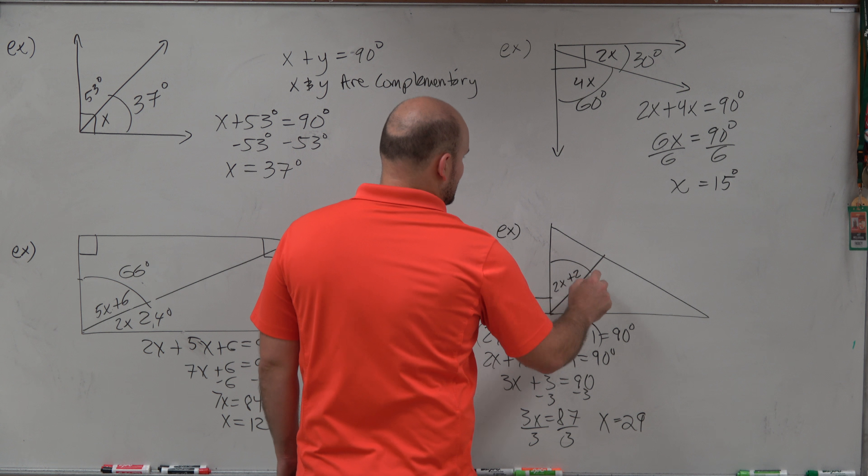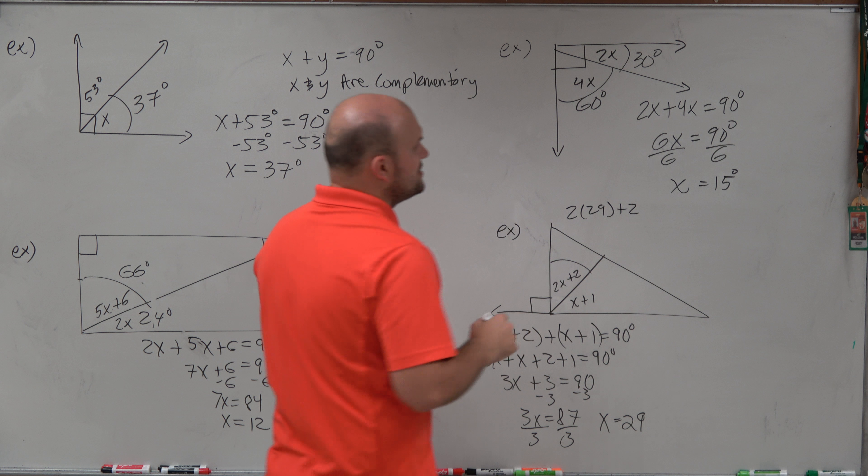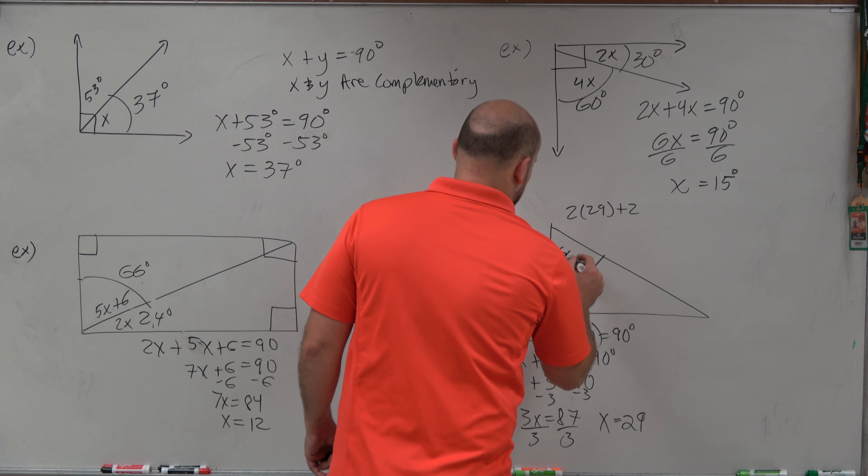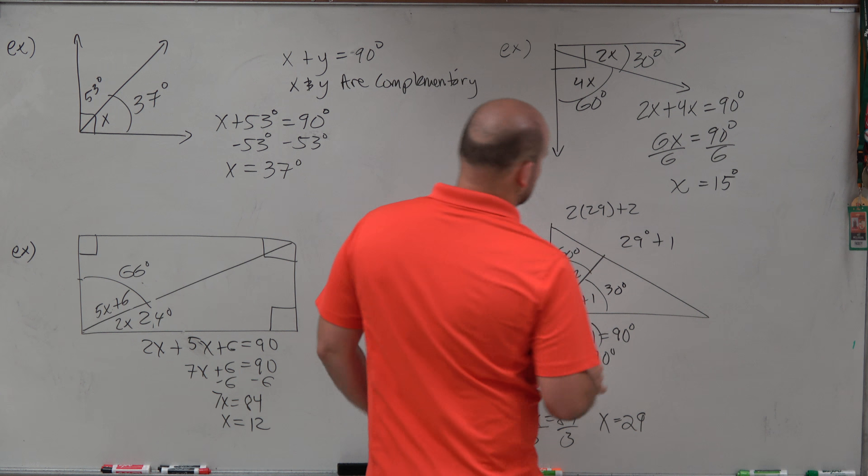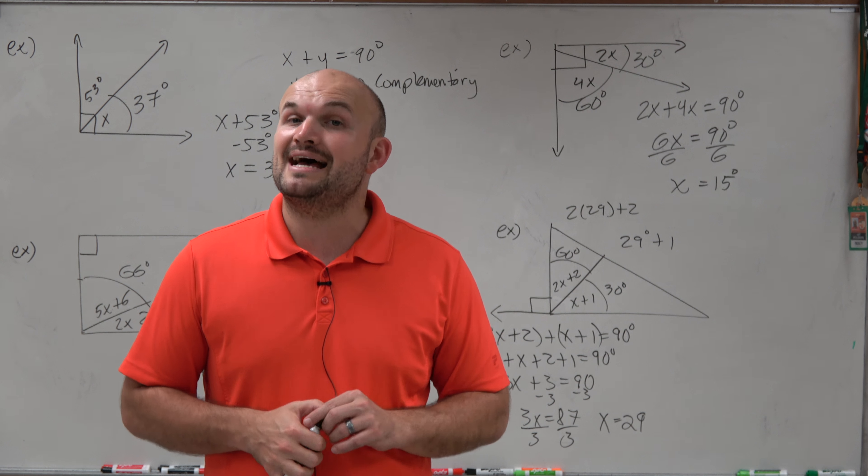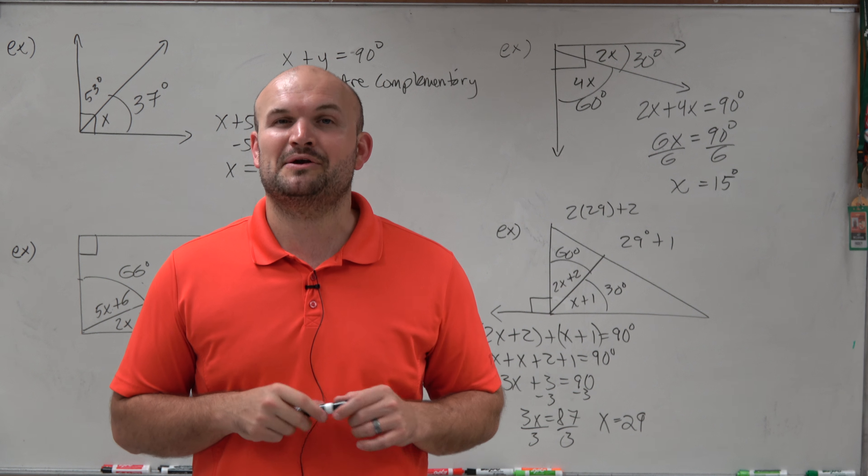So now, to find the missing measure, I would have 2 times 29 plus 2. So 2 times 29 is going to be 58 plus 2 is 60. And here, I'm going to have 29 degrees plus 1, which is 30 degrees. And obviously, you can say 30 plus 60 is equal to 90. So there you go, ladies and gentlemen. That is how you solve for x, as well as your missing angle, using complementary angles. Thanks.